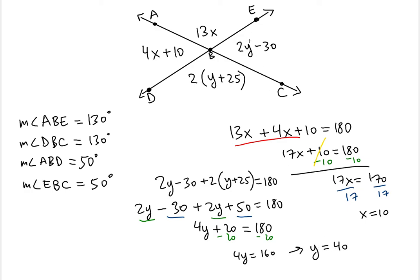So y is 40. So that means this angle, EBC, this is the targeted angle. Twice 40, that's 80. 80 minus 30, 50. Bingo. Now let's check if this one is 50 as well. 40 plus 25, that's 65. 65 times 2, bingo. 130 degrees.